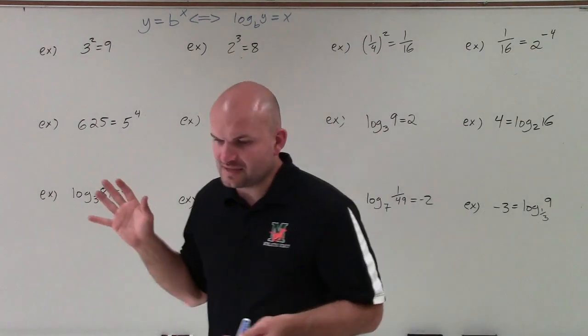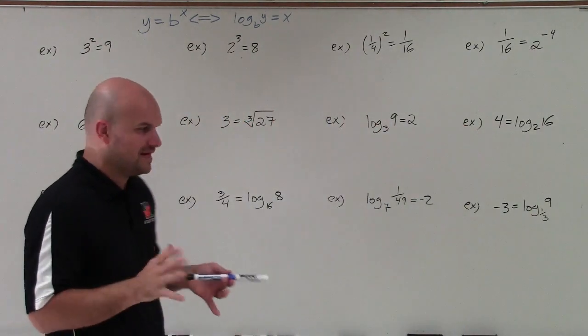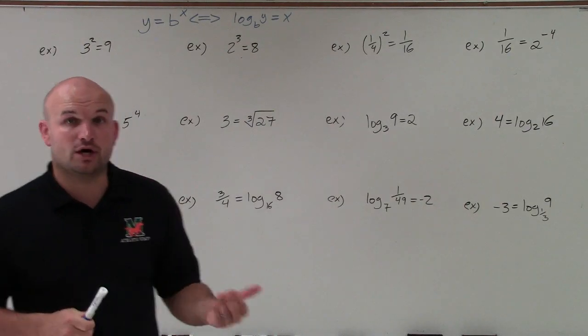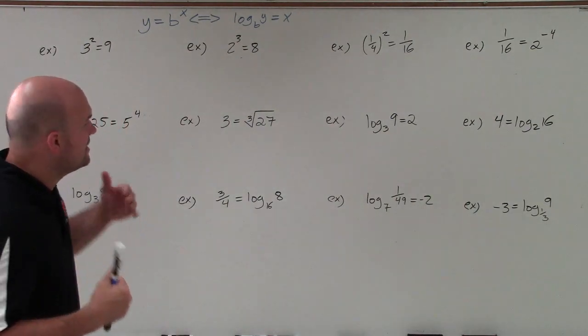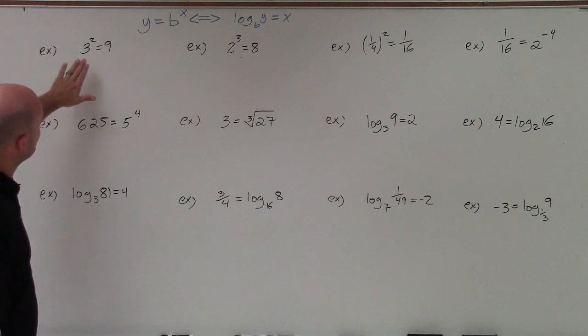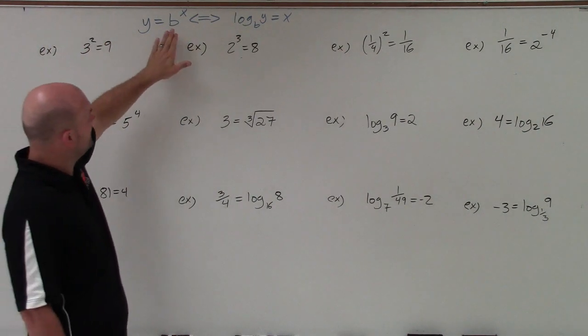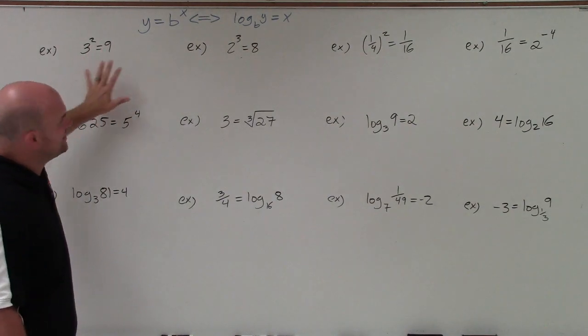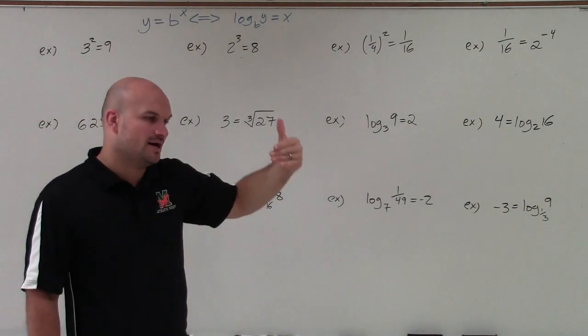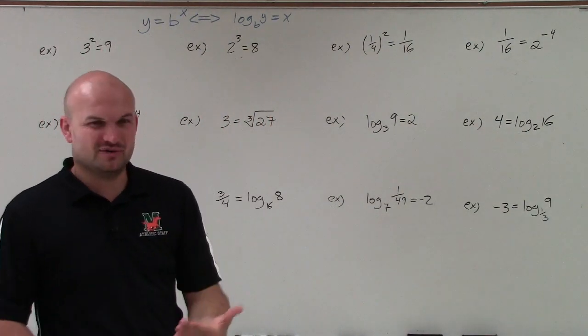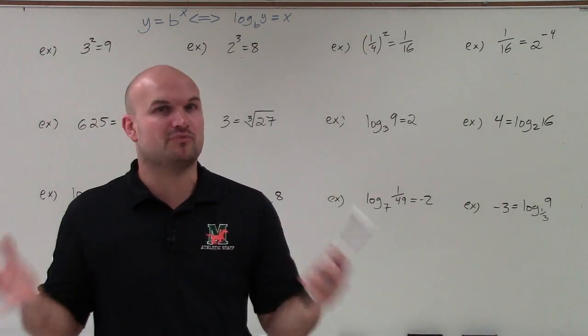So logarithmic and exponential functions are what we call inverses of one another. And the way that they're related is, if we look at this equation, you have 3 squared equals 9. Well, basically, all we're simply going to do to rewrite this, we can work through this slow step by step. And that's what I'll do for the first problem, is just really break it down.